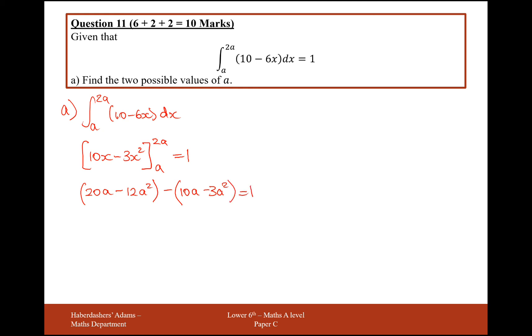And this equals 1. So expanding the brackets here, we're going to get 20a minus 12a squared minus 10a plus, from the double negative, 3a squared equals 1. So simplifying this, we're going to get minus 9a squared plus 10a minus 1 equals 0.